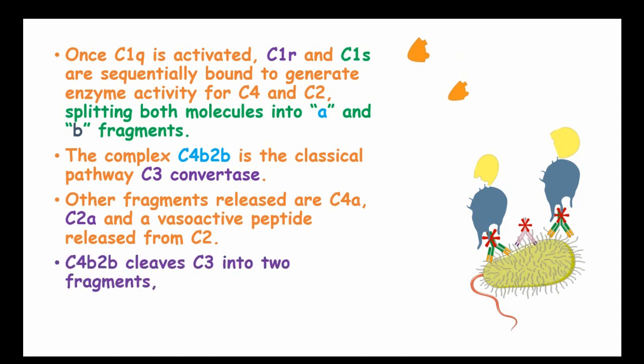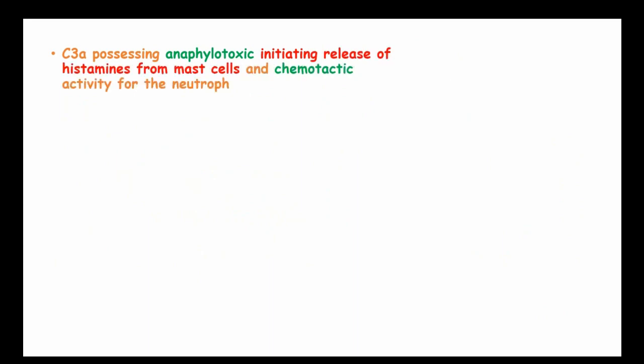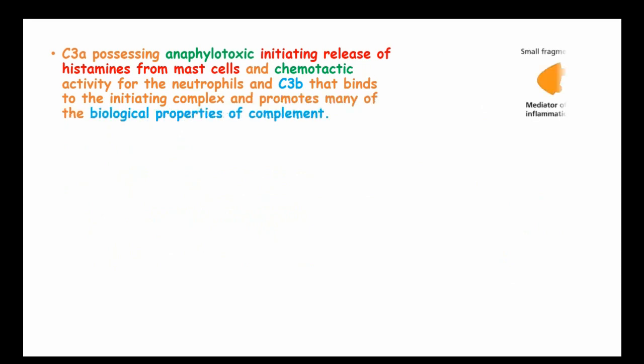C4B and C2B cleave C3 into two fragments, C3A and C3B. C3A possesses anaphylatoxic properties, initiating release of histamines from the mast cells and chemotactic activity for neutrophils. C3B binds to the initiating complex and promotes many of the biological properties of complement.